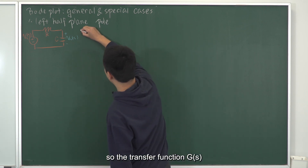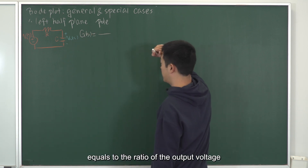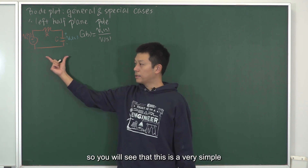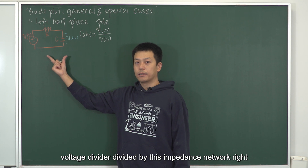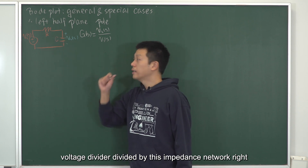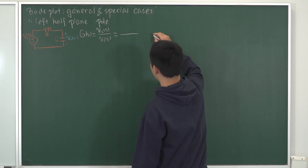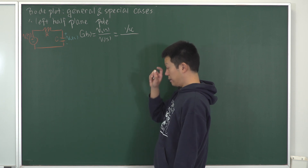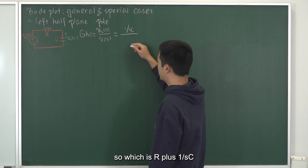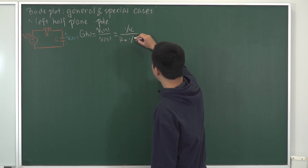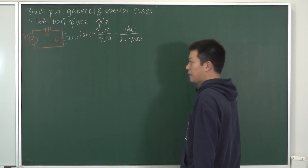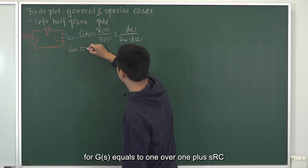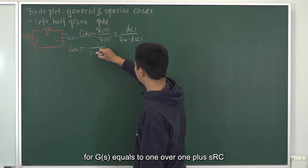The transfer function G(s) equals the ratio of the output voltage to the input voltage. This is a simple voltage divider. The ratio equals the impedance of the capacitor, 1 over SC, divided by the sum of impedances of R in series with C, which is R plus 1 over SC. Simplifying, G(s) equals 1 over (1 plus SRC).